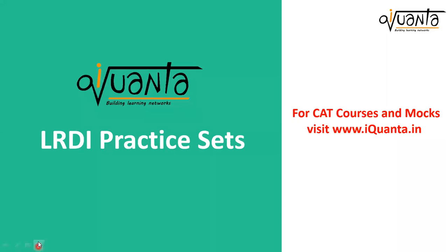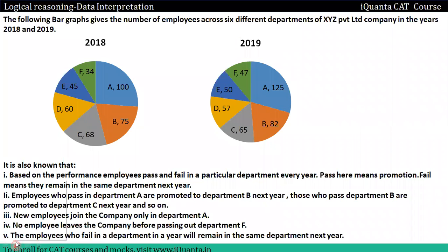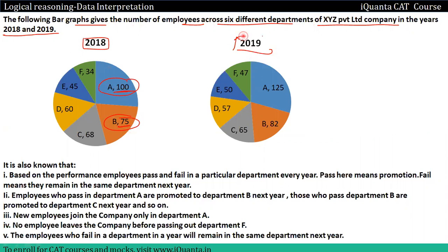Hi everyone. In this video we will understand how to solve this type of set. We are given that the following bar graph gives the number of employees across six different departments of XYZ Private Limited in the years 2018 and 2019. In 2018, department A has 100 employees, department B has 75. Based on the performance, employees pass and fail in a particular department every year. Pass here means promotion.